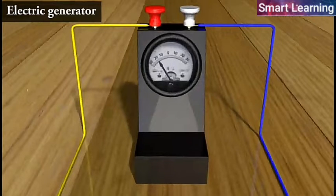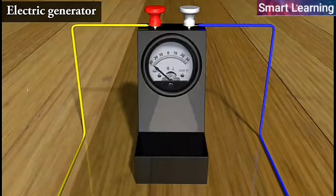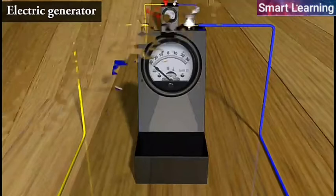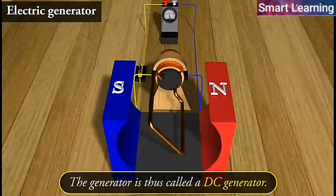Thus, a unidirectional current is produced. The generator is thus called a DC generator.